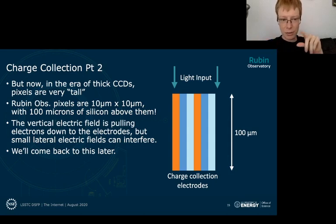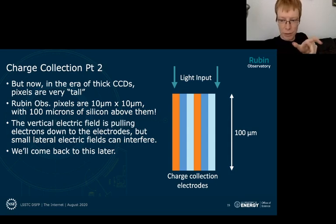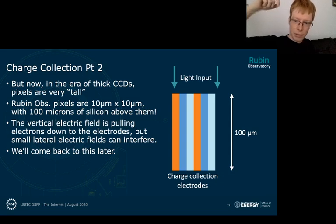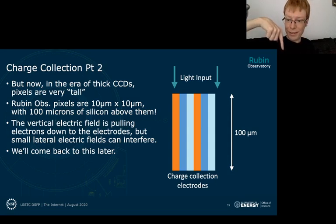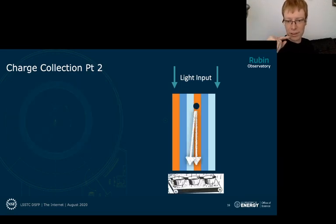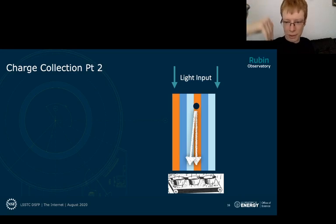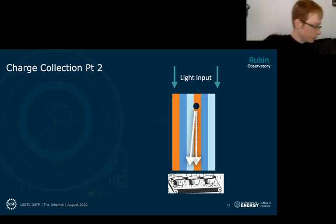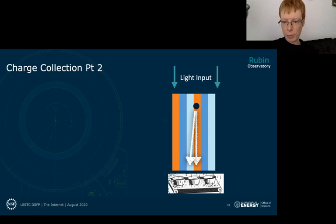With thick CCDs, the ratio of the silicon height above the pixel to the pixel size itself is very large. It used to be that there were only 10–20 microns of silicon above a pixel that might be 15 microns wide. But now an electron that converts way up at the top of a big slab needs to travel all the way down and land in hopefully the same pixel underneath where it started. It's only a small angular difference to end up in an adjacent pixel instead — and that's one of the real challenges with Rubin Observatory sensors.